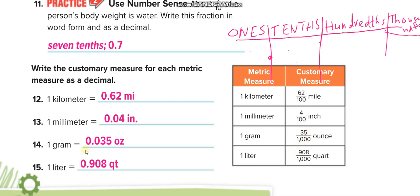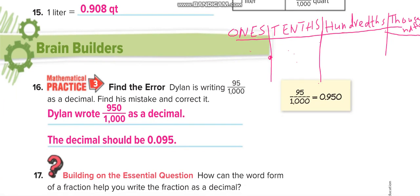35 over 1000, similarly 0.035. 5 will come at the thousandth place, 3 at the hundredth, and zero. And 0.908. I have a question here for you guys.